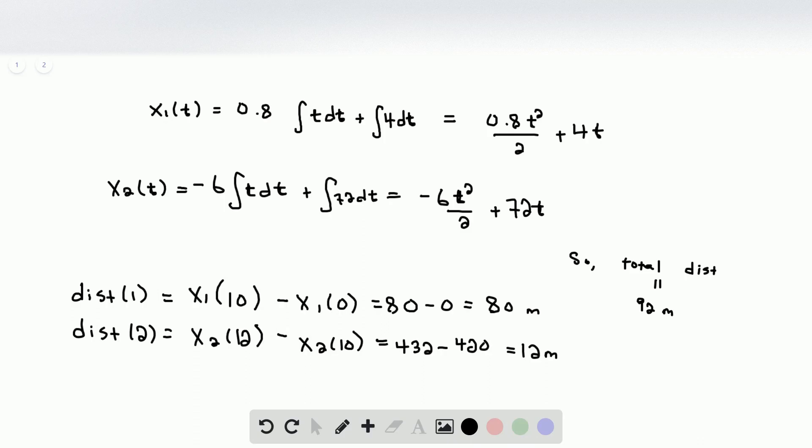But the total displacement is actually smaller because this 12 meters, because the velocity had a negative slope, it was moving the opposite direction. So we need to do 80 minus 12. We moved 80 meters to the right and then 12 meters back to the left.